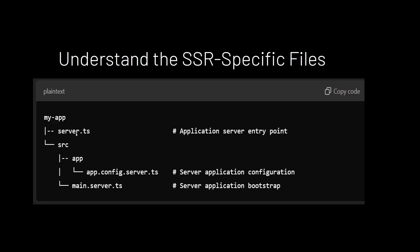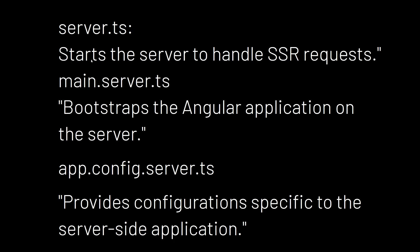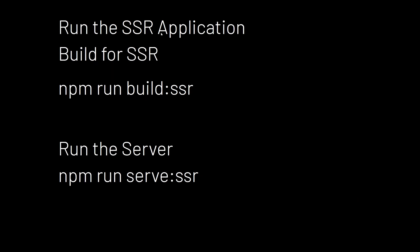Understanding the SSR-specific files: your project will have a server.ts file, and inside the source folder you'll have app.config.server.ts — in addition to the regular app.config.ts file, both TS files are merged. You'll also have main.server.ts, which is the server application entry point for bootstrapping the Angular application on the server. app.config.server.ts provides configuration specific to the server-side application, and server.ts starts the server to handle SSR requests.